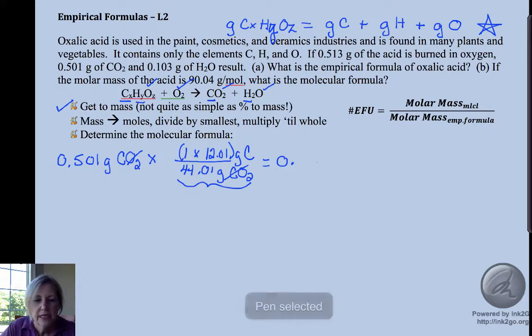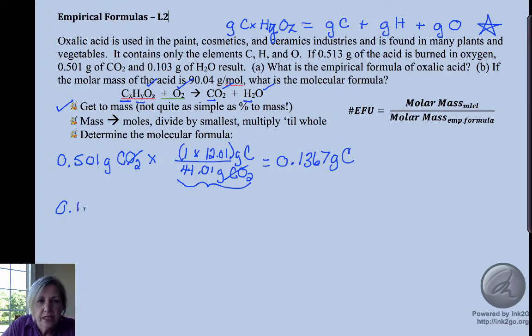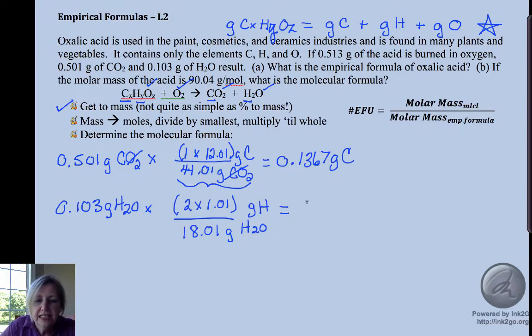Okay, so this gives me—whoops, I wrote the wrong number down, let me fix that for you—that will give me 0.1367 grams of carbon. Now I'm going to do the same thing for my hydrogen because all the hydrogen is in water and I'm given the amount of water. So I have this many grams of water and I'm going to use the percent composition. There are two hydrogens times 1.01 over the whole mass of 18.01 grams of water, and that gives me 0.01155 grams of hydrogen. Hydrogen is pretty much a lightweight, right?